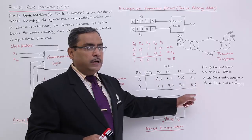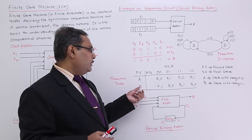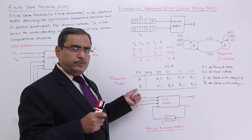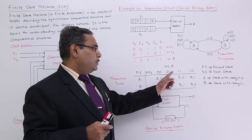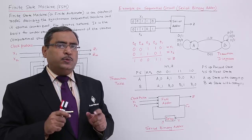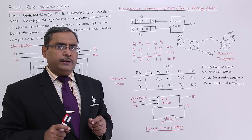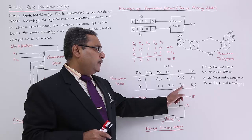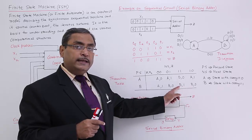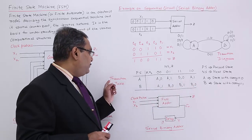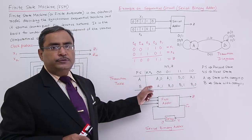State B means I already have a carry. If the input is 1,1: doing 1+1+1=3, which is binary 11, so sum is 1 and carry remains 1 — I stay in state B. In this way, the complete transition table has been formed for all input combinations.